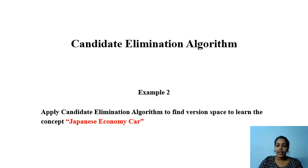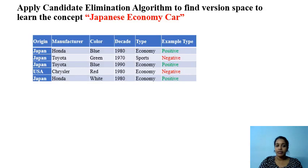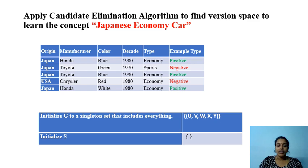Consider another example for the candidate elimination algorithm. We will learn the version space to learn the concept 'Japanese Economic Curve.' Given the training instances having 5 tuples, 3 are positive and 2 are negative instances. We start from a set G that accepts all instances, and S that accepts no instances as positive.